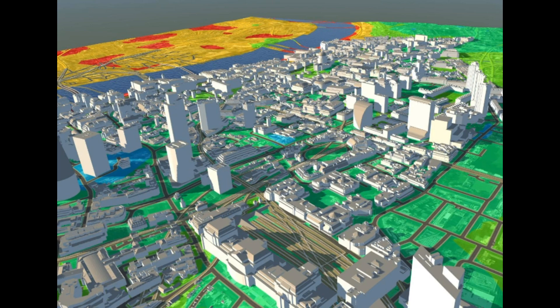ArcGIS includes software such as ArcReader, ArcGIS Desktop, ArcView, ArcEditor, and ArcInfo. ArcReader is a software providing basic tools for map viewing, printing, and querying spatial data. ArcEditor is used for mid-level editing of spatial data. ArcInfo is used for high-level editing.